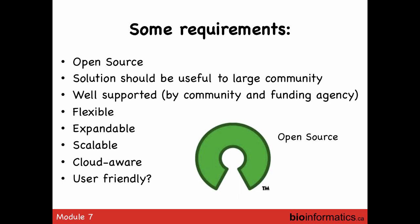Some important things for pipeline tools: they should be open source, which removes the black box component. A large user base makes the code more robust. A big community supporting it is very useful. Flexibility and expandability are key. If it can work on the cloud, that's good — you've seen the advantages of cloud computing this week. And ideally, especially for biologists, if it's user-friendly, so much the better.